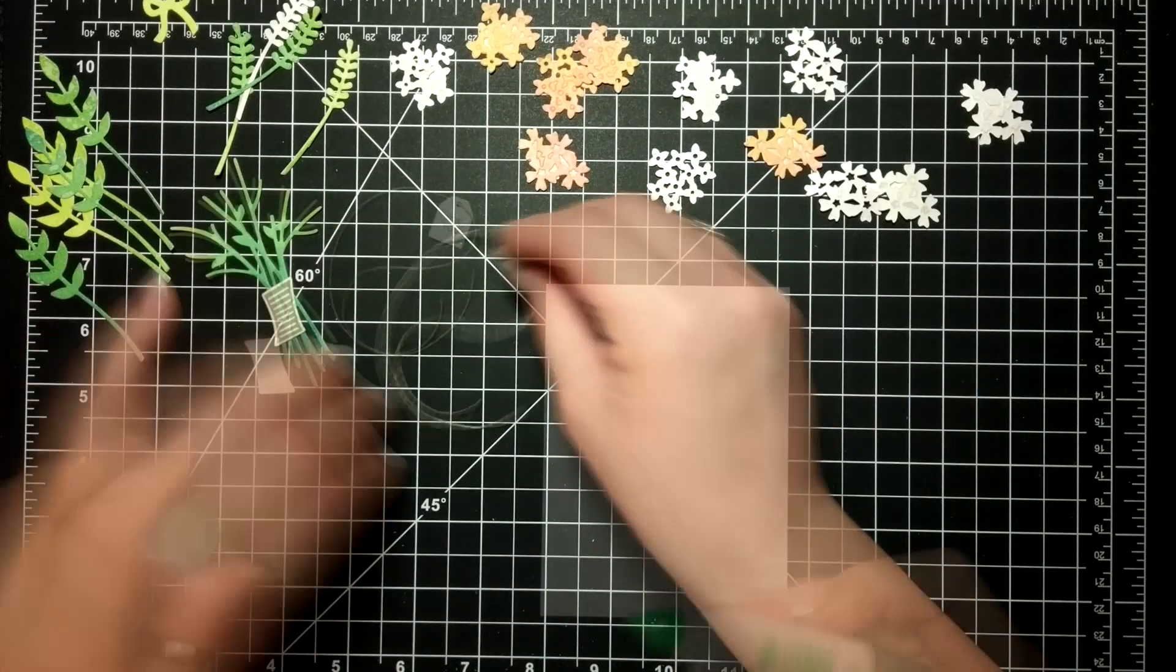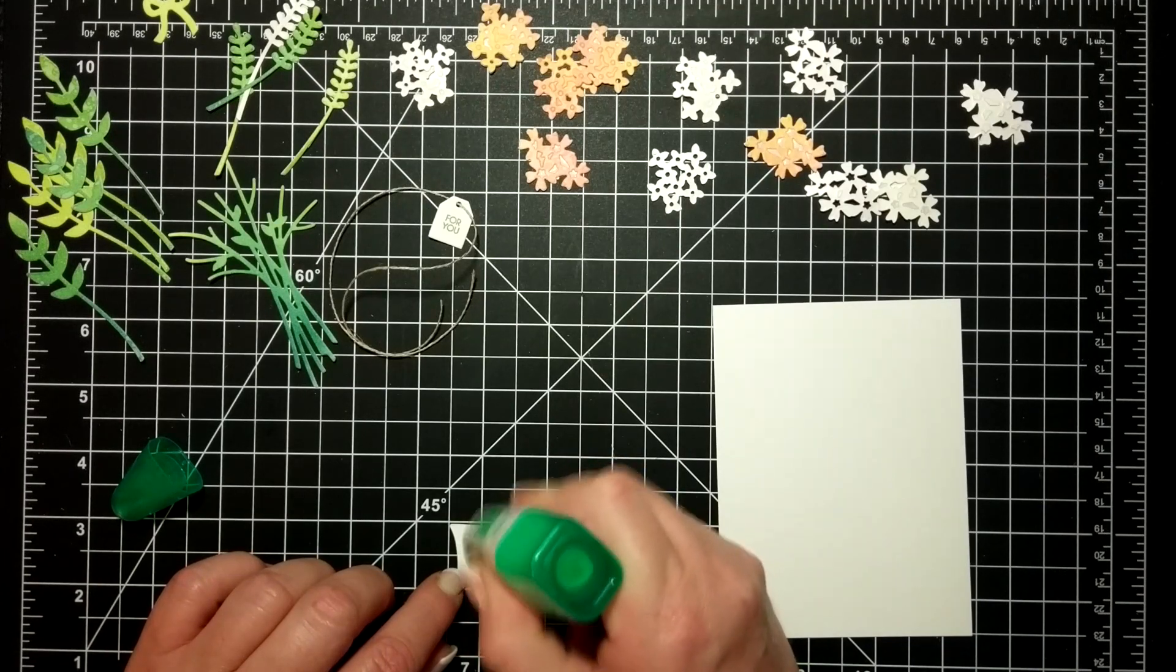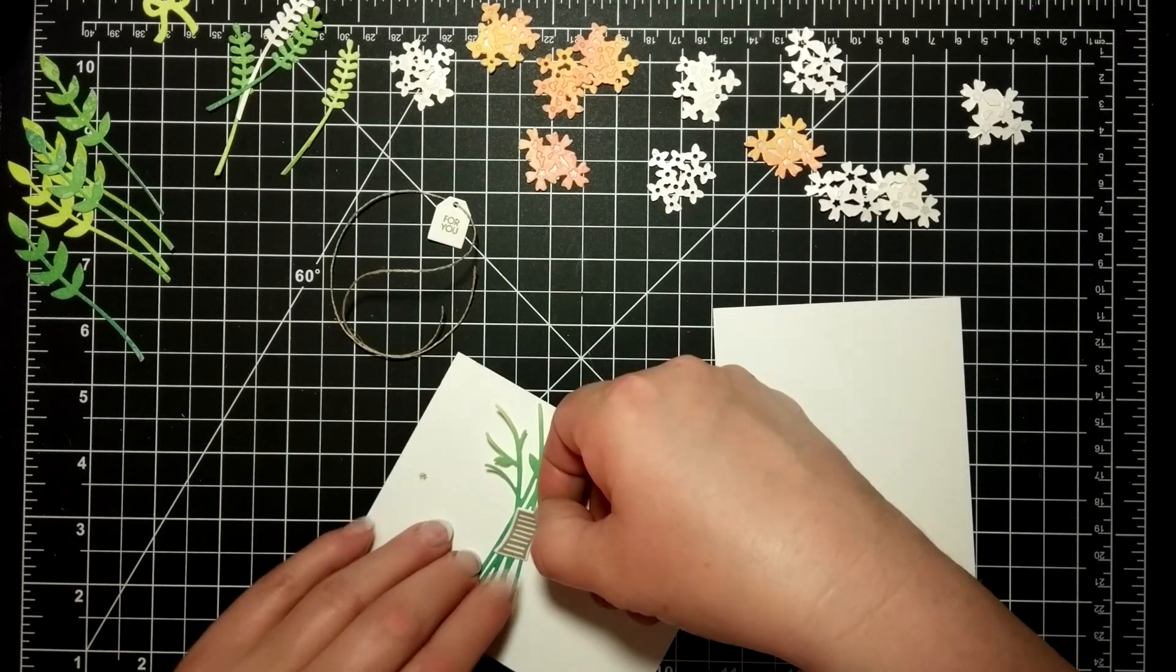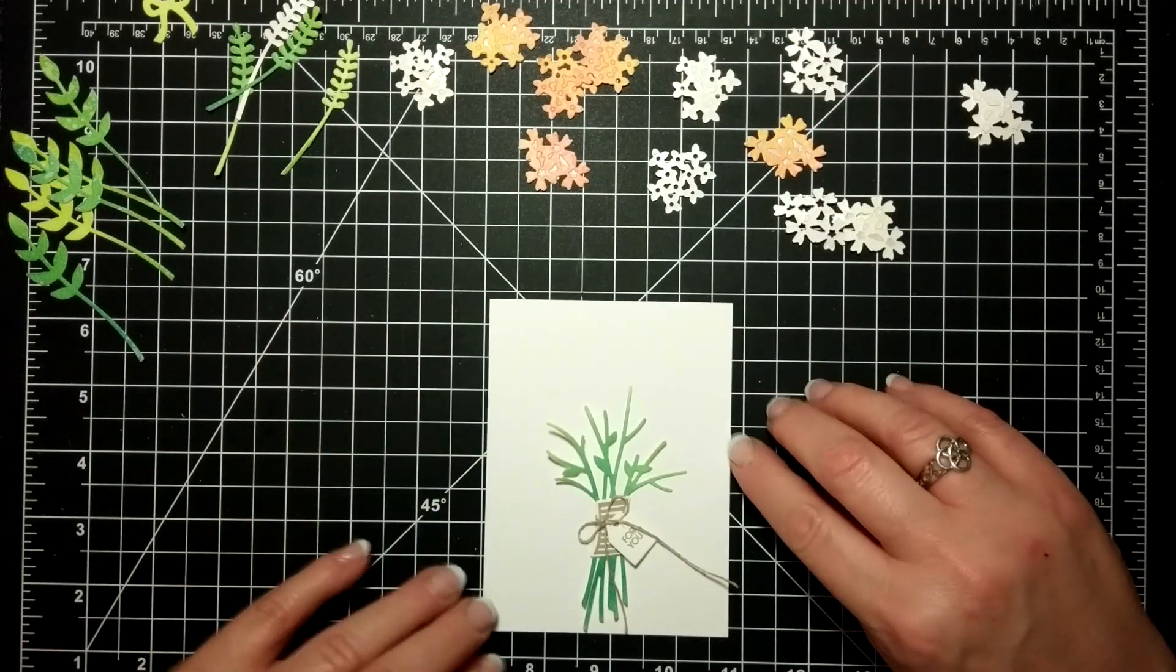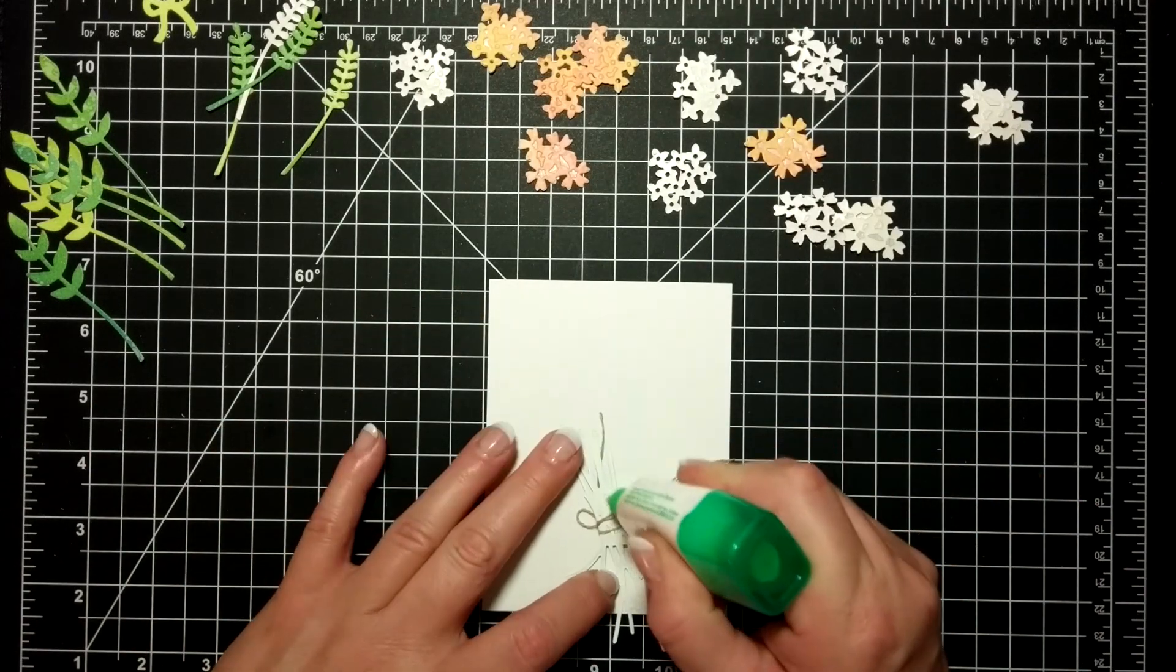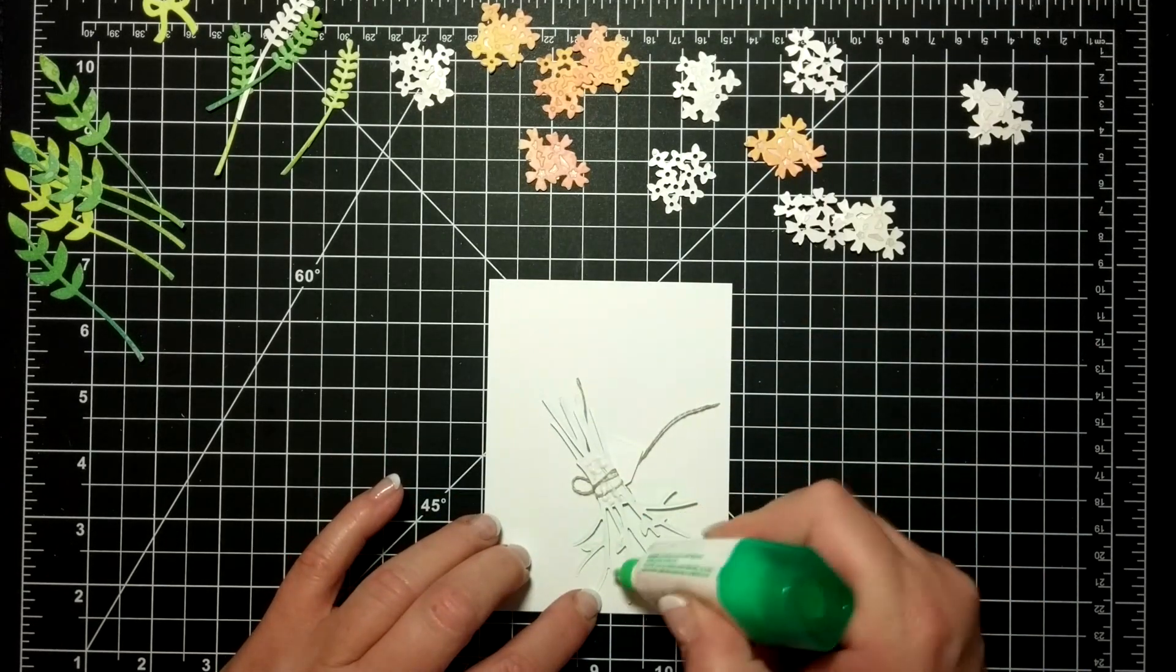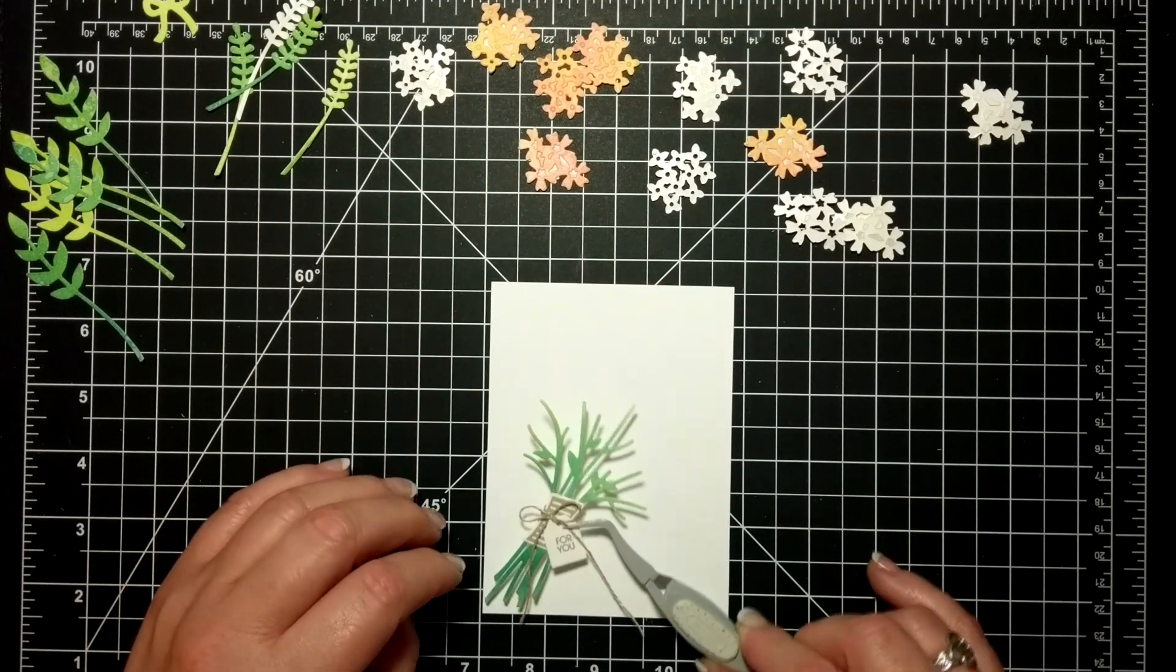I have linen thread here and I will attach that to the whole bouquet. But first, I'm going to go in with my Tombow glue and put the wrap down first, and then I'm going to tie the 'for you' and linen thread around with a cute little bow. Then I'm applying glue all over the back, being careful not to have any ooze out.